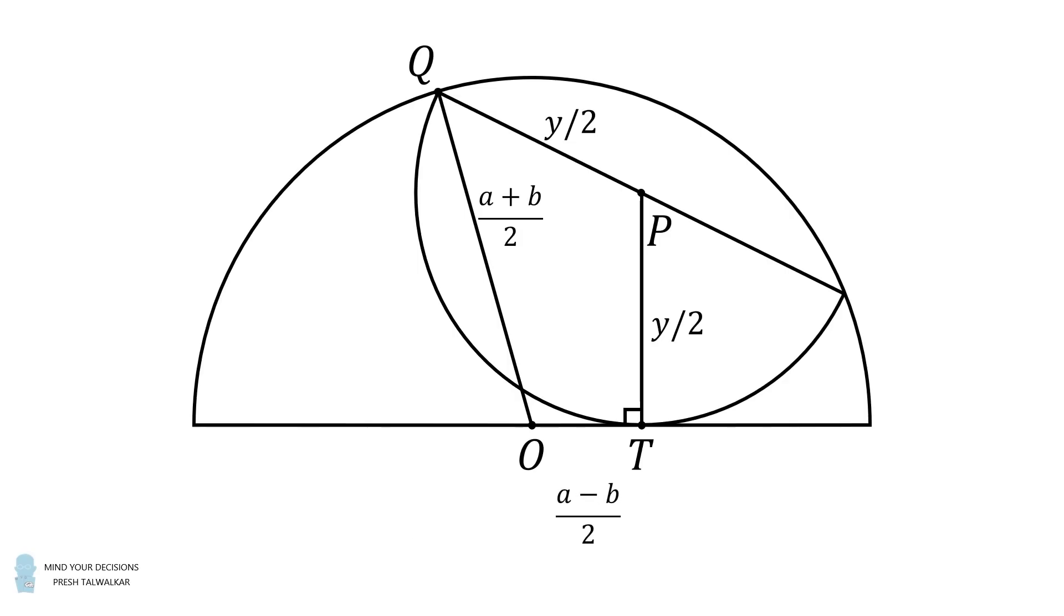Now construct the radius that goes through the points O and P. Because this bisects the diameter of the inscribed semicircle, it will be the perpendicular bisector. We now have two different right triangles that we can focus on. Let's get rid of everything else.